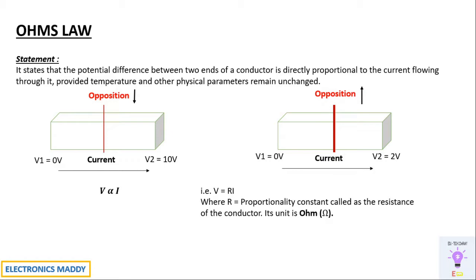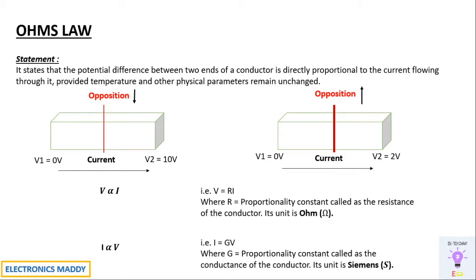Resistance plays a very important role in electrical engineering. We can also see it as: higher the current, higher will be the voltage. So we can say I is directly proportional to V. In order to remove the proportionality constant, we introduce something called G, which is called the conductance of the conductor — it's the reciprocal of resistance. Its unit is Siemens, denoted as S.